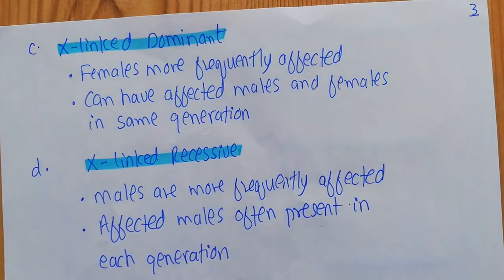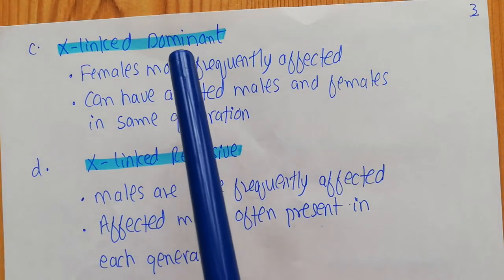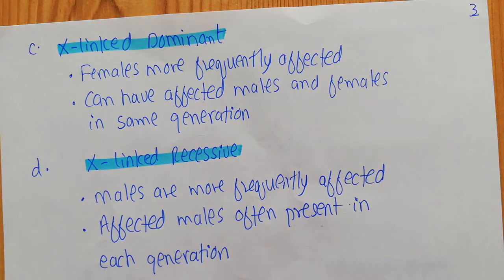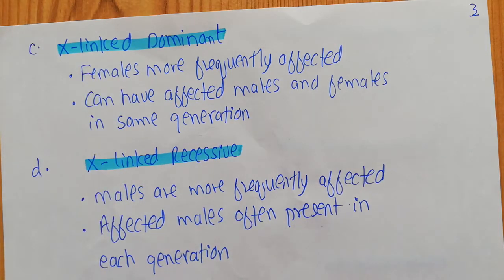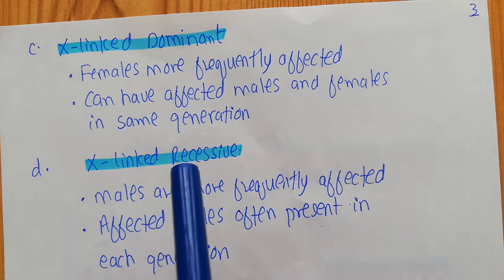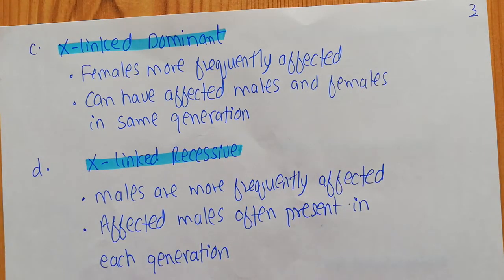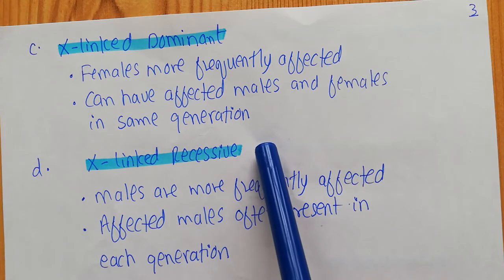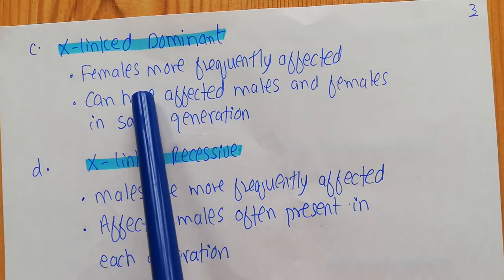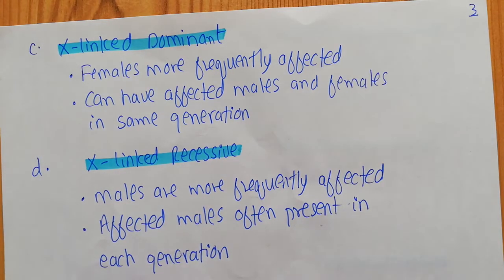The third mode is X-linked dominant. It is dominant because it can express itself in both the homozygous and heterozygous condition, and X-linked means the causative gene is present on the X chromosome. In X-linked dominant inheritance, females are frequently affected, and both affected males and females can be present in the same generation. It is more common in females because females have two copies of the X chromosome, giving them a chance of inheriting the mutant allele from either the father or the mother.